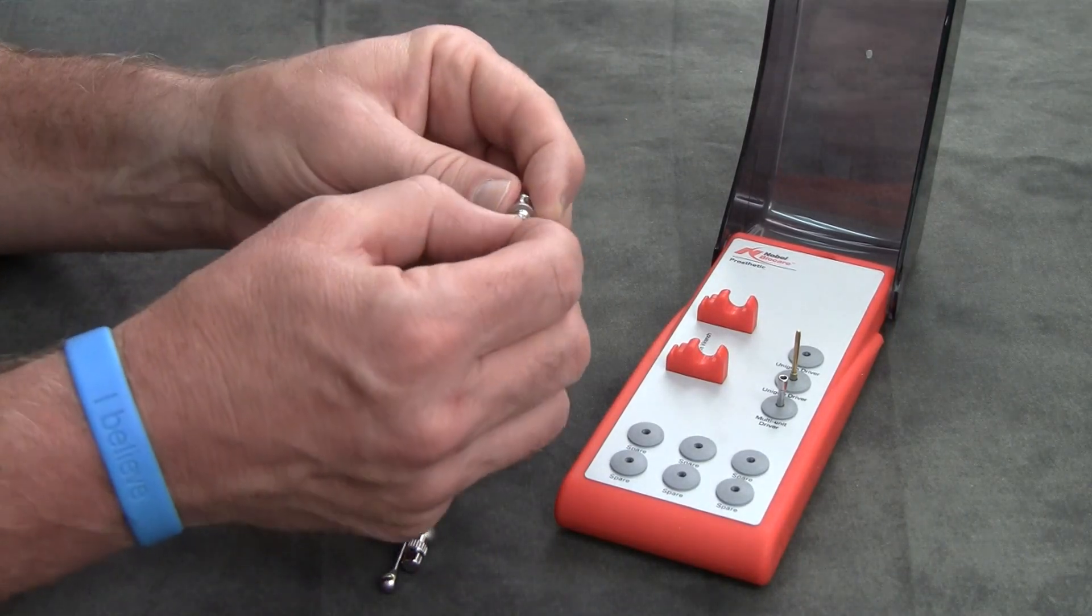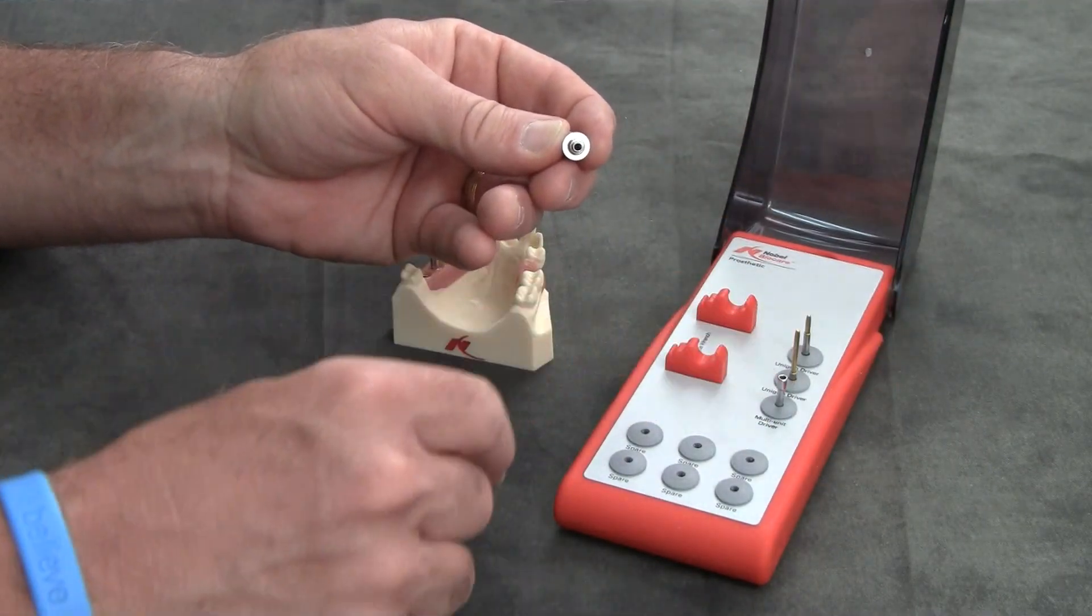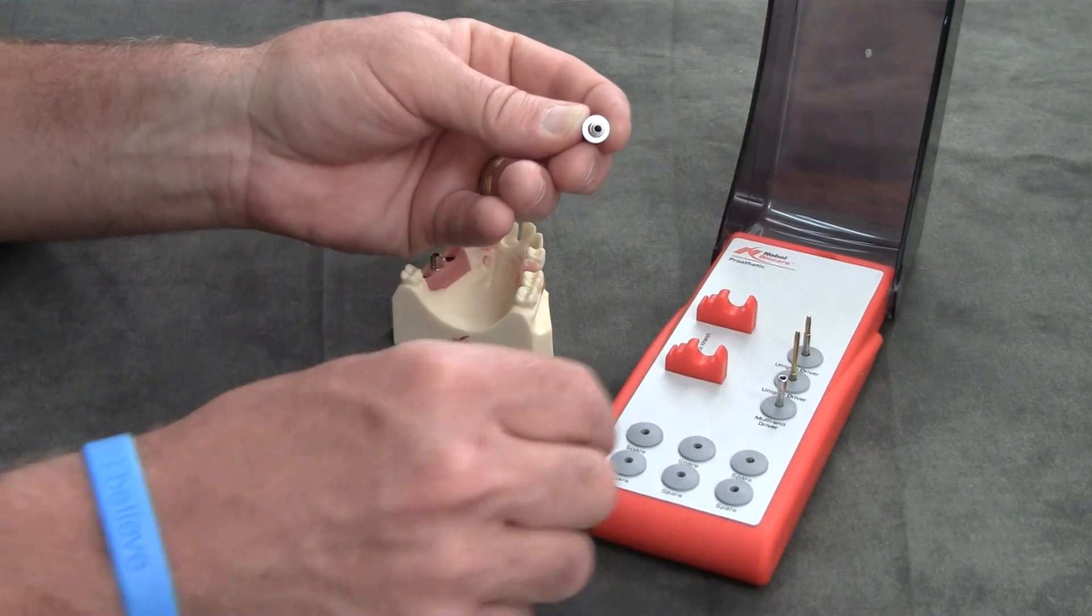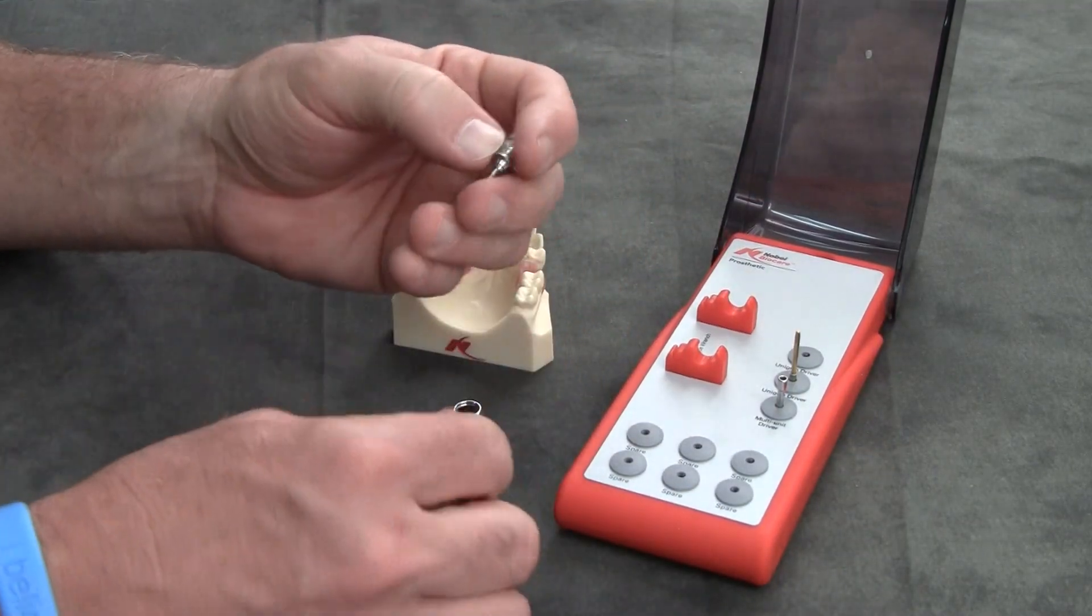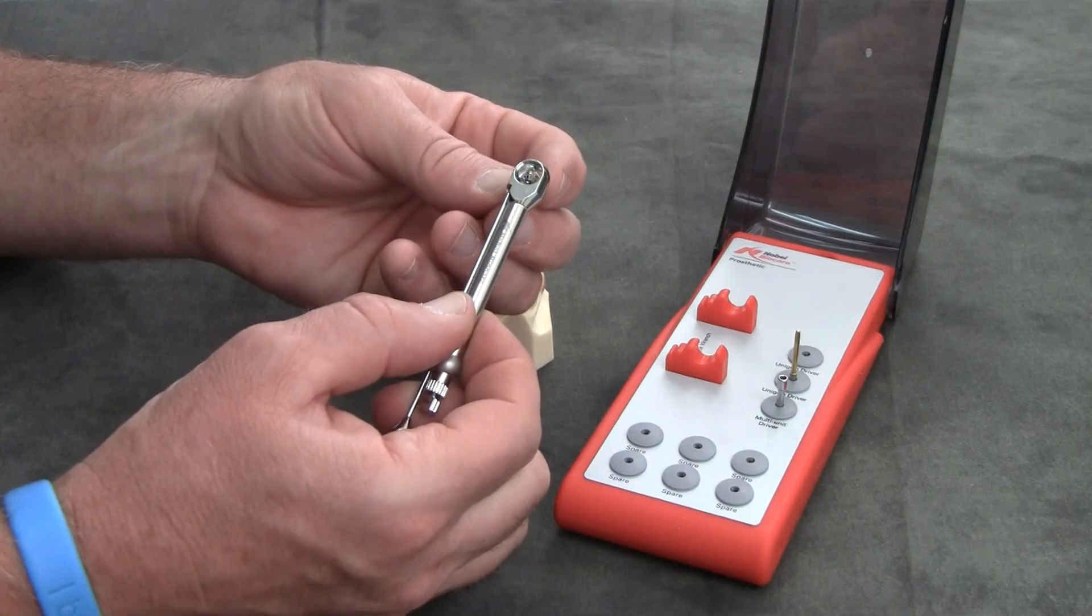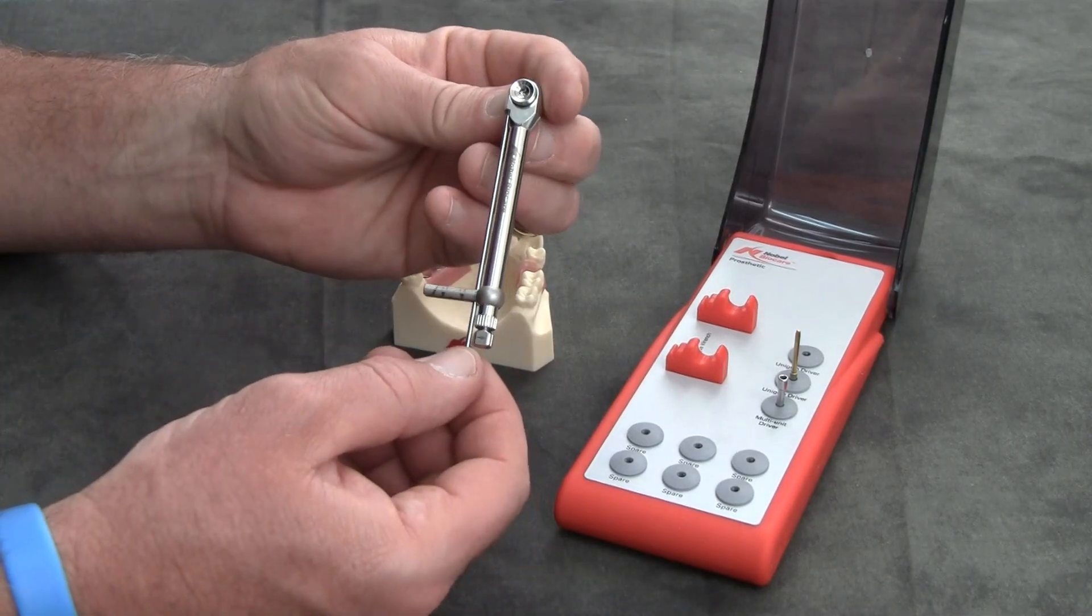To release, simply pull out firmly and then utilize either the long or the multi-unit driver. Now it simply fits in from the bottom, making sure that the Nobel BioCare logo is on top.